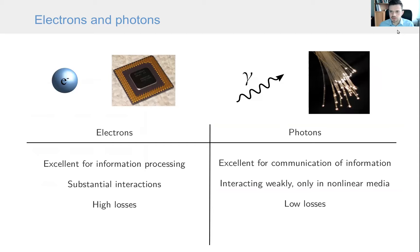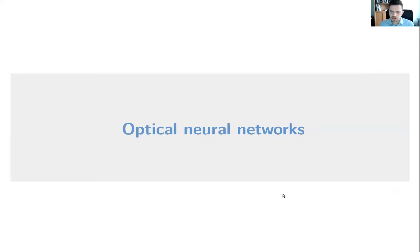Why photons? We know that electronic systems are excellent for information processing — they are characterized by substantial interactions, which makes it possible to perform practically any kind of operation. However, in big data applications this comes with high losses. On the other hand, photons are excellent for communication — we use optical fiber for sending information over large distances at high data rates, much more efficiently than electric cables. The problem is that photons interact very weakly, and only in nonlinear media.